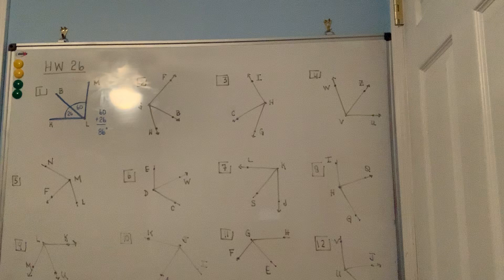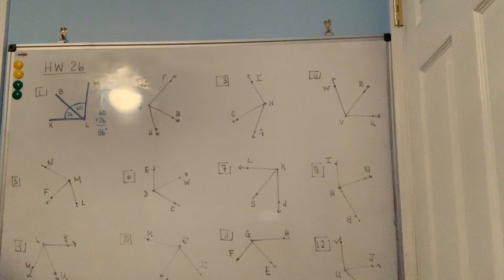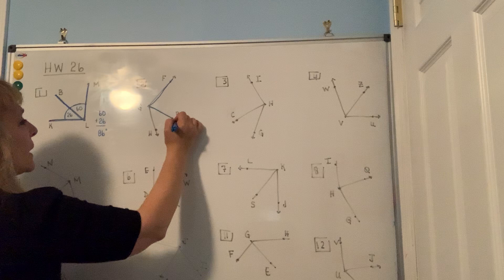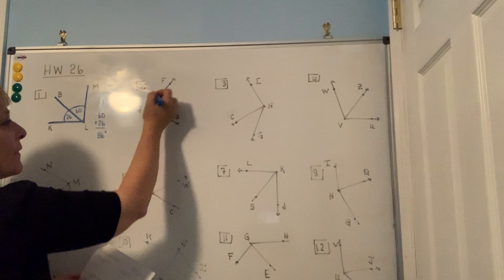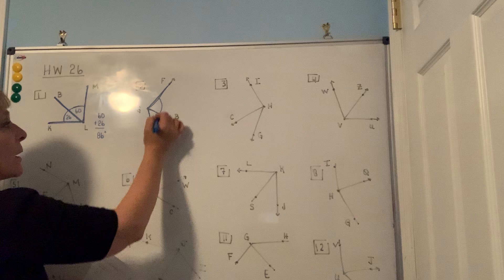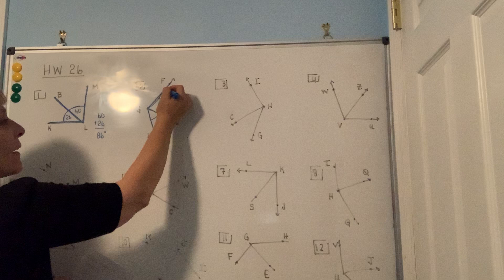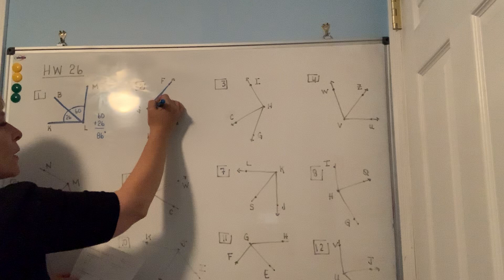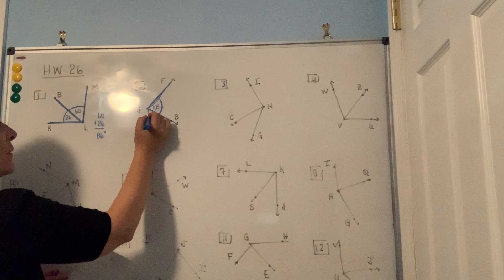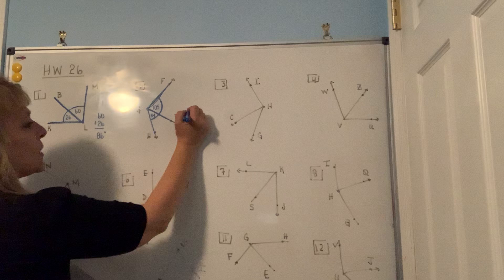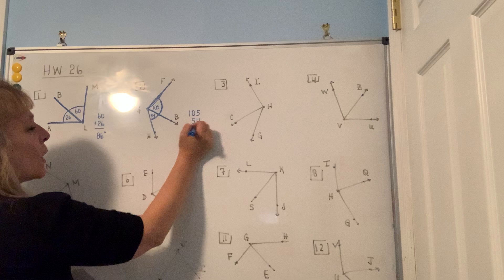Problem number two says find the measure of angle FGH — the big total angle. They tell you that angle FGB is 105 degrees, and angle BGH is 54 degrees. So to find the total angle, add 105 and 54 together to get 159 degrees for the large angle.